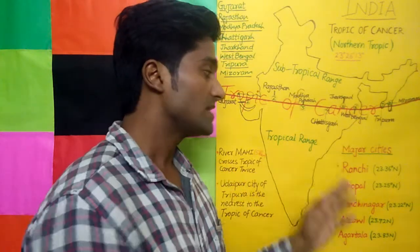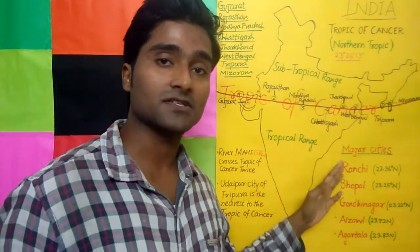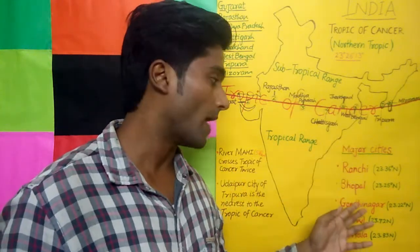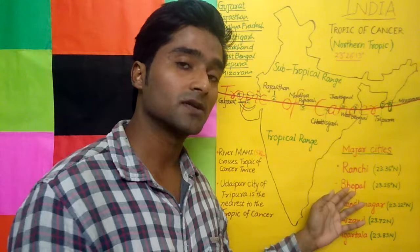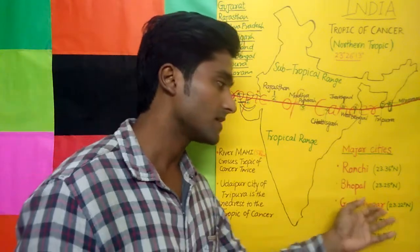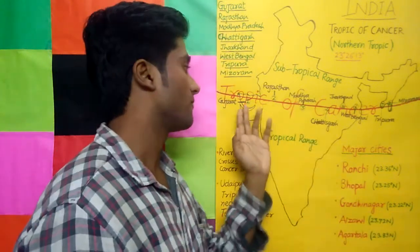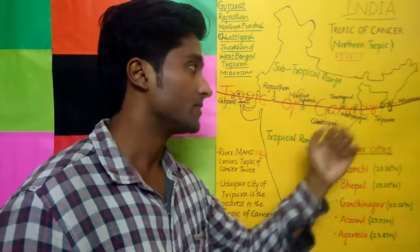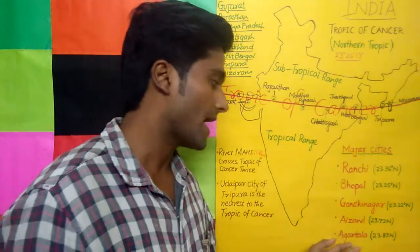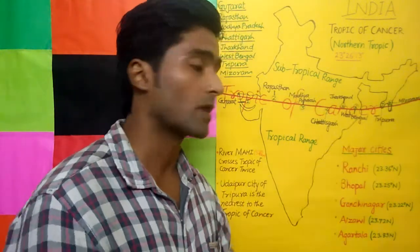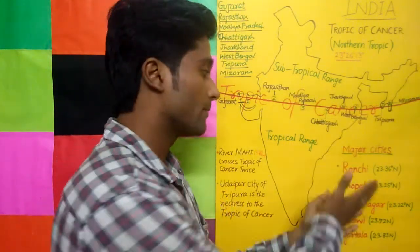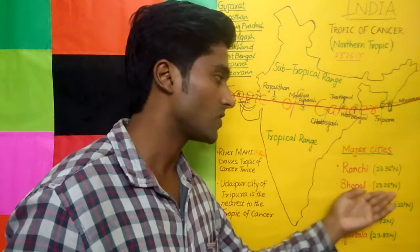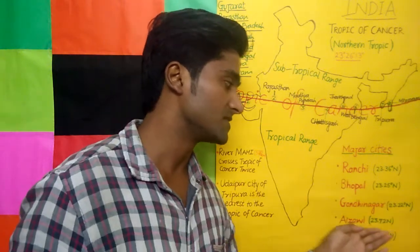What are the major cities on the Tropic of Cancer? The major cities are Ranchi, the capital of Jharkhand; Bhopal, the capital of Madhya Pradesh; Gandhinagar, the capital of Gujarat; Aizawl, the capital of Mizoram; and Agartala, the capital of Tripura. These are the major cities along with their coordinates.